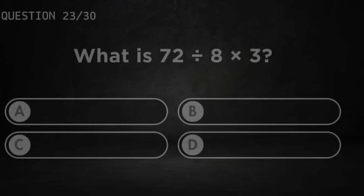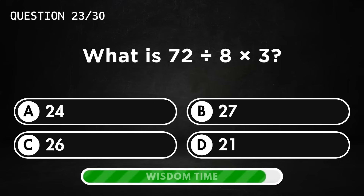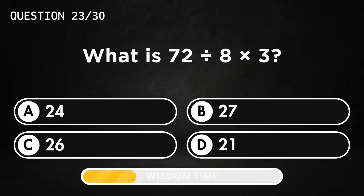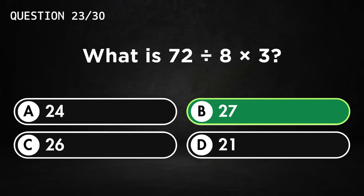What is 72 divided by 8 times 3? Answer B, 27.